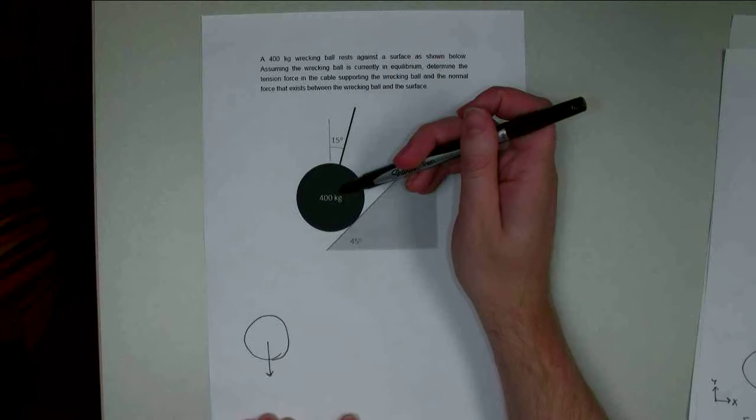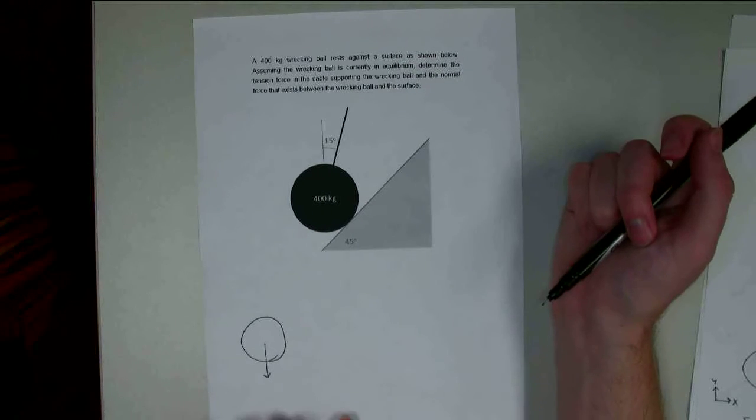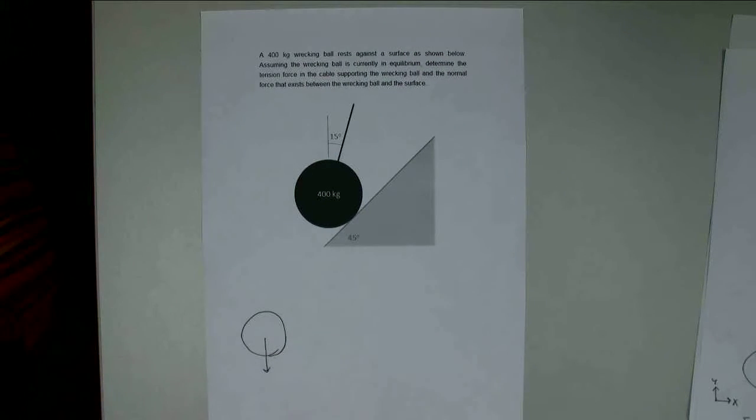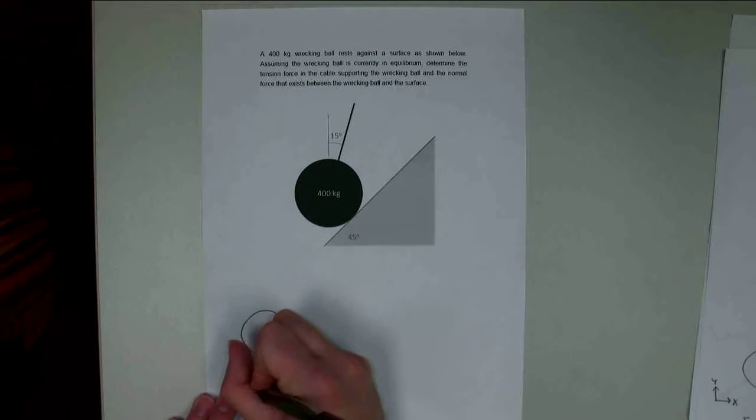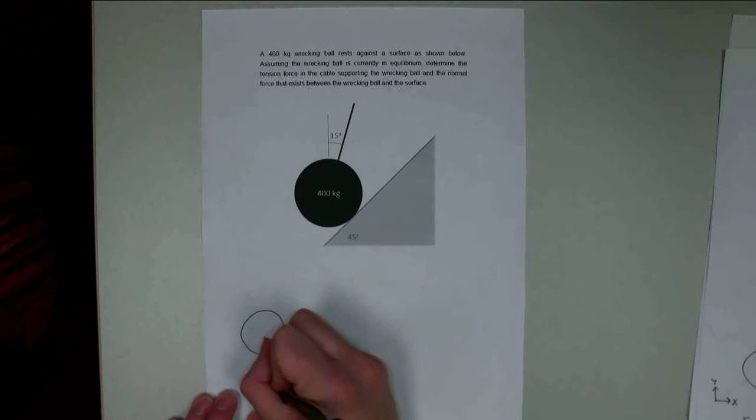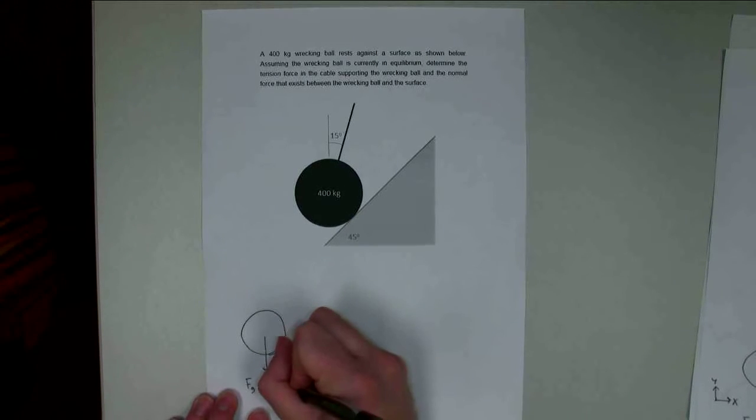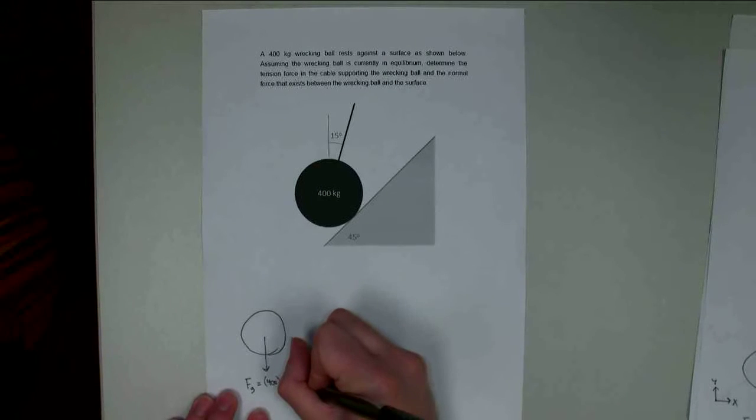So I have 400 kilograms. I'm assuming I'm at sea level, so I'm going to assume 9.81 newtons per kilogram. So Fg is going to be equal to 400 times 9.81, and the units of that are going to be newtons.